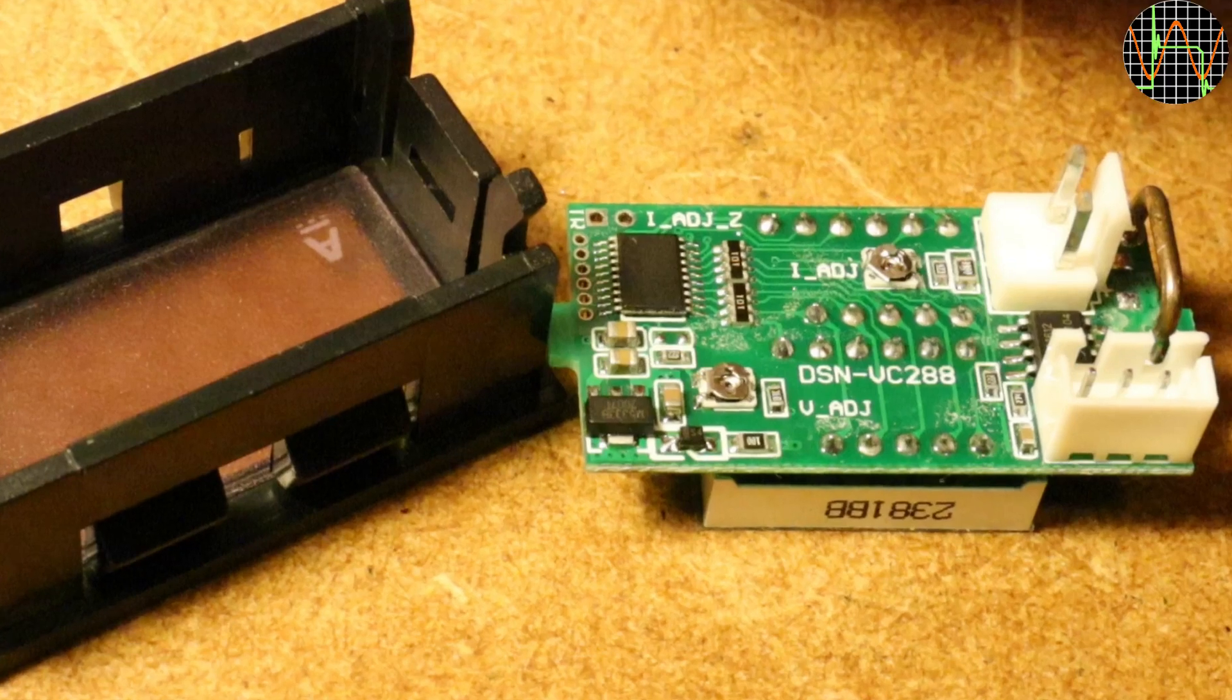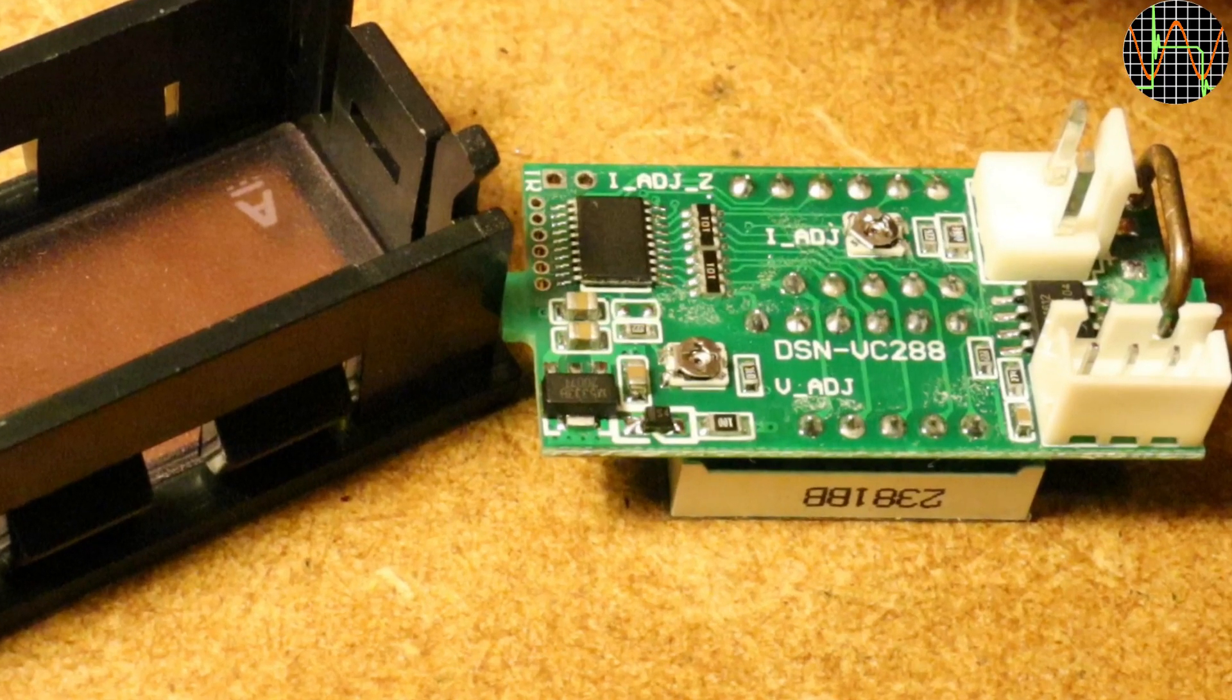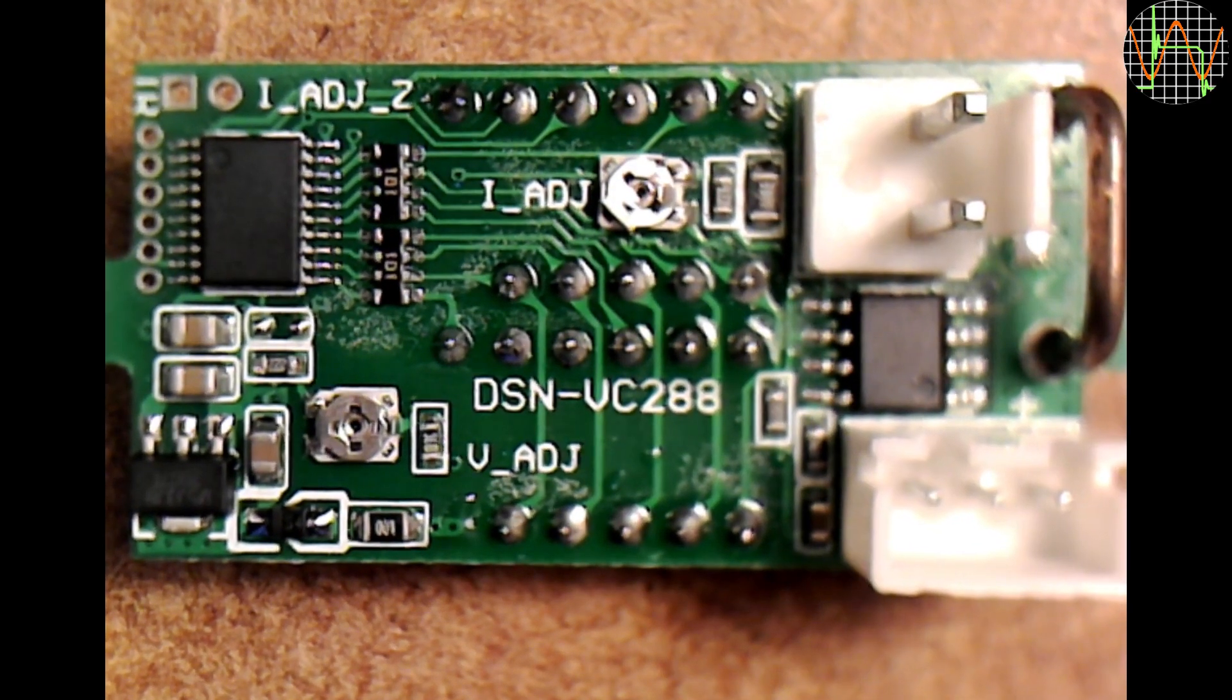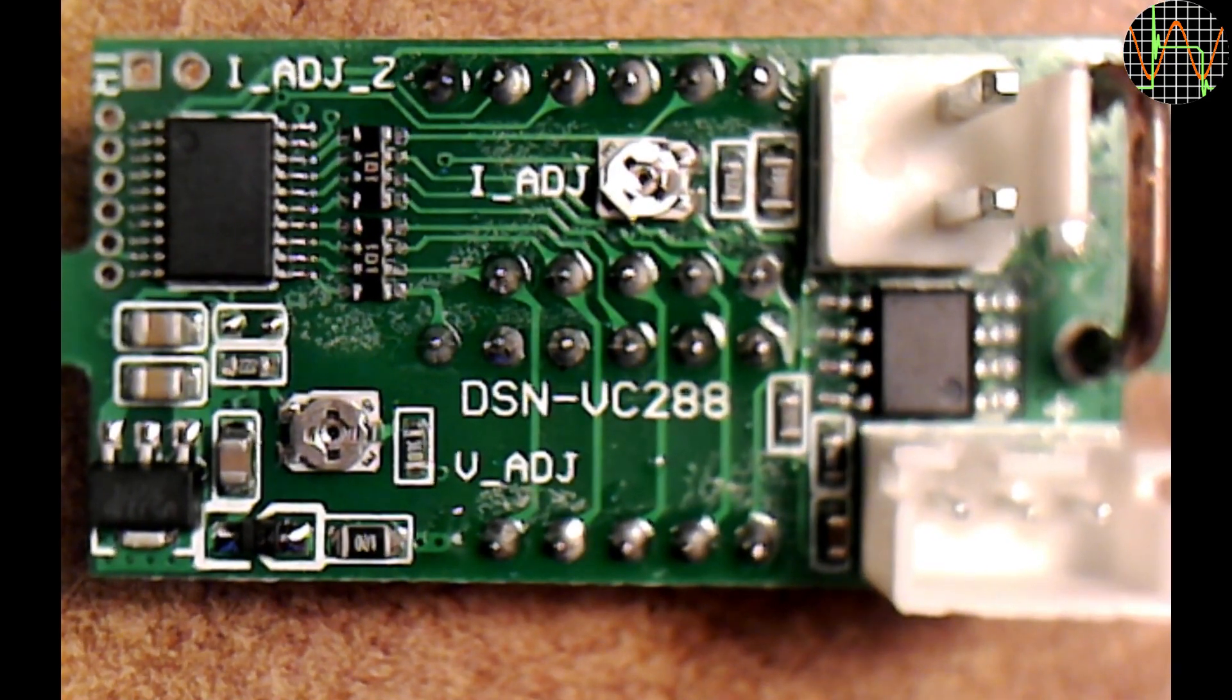So just to get the frame into your panel, you have to remove the PCB first, clip the empty frame in and then reinstall the PCB from the rear. A quick look at the PCB which is of type DSN-VC288.